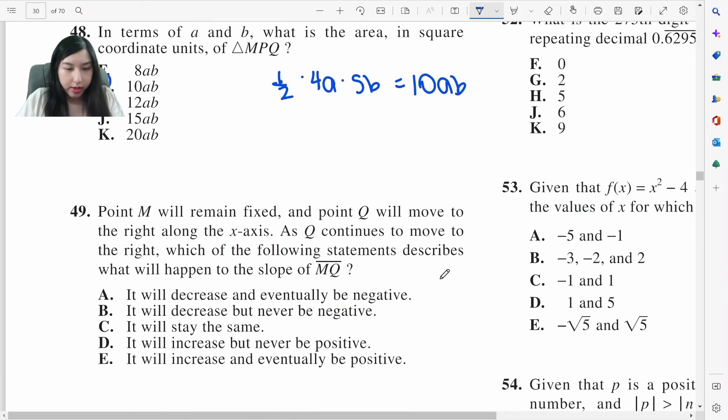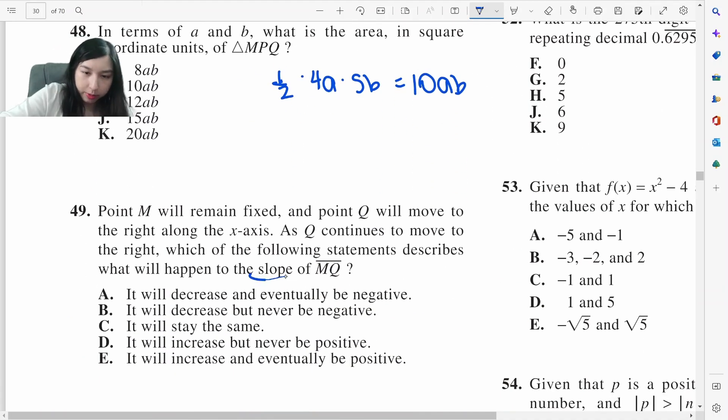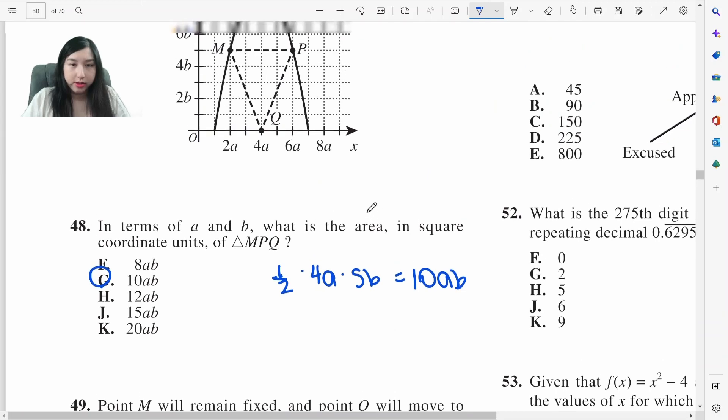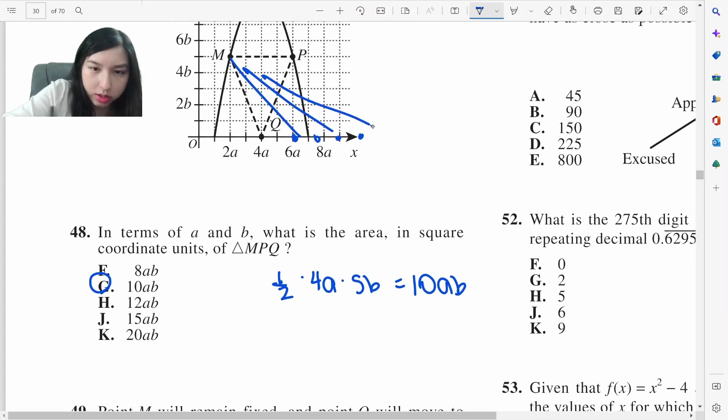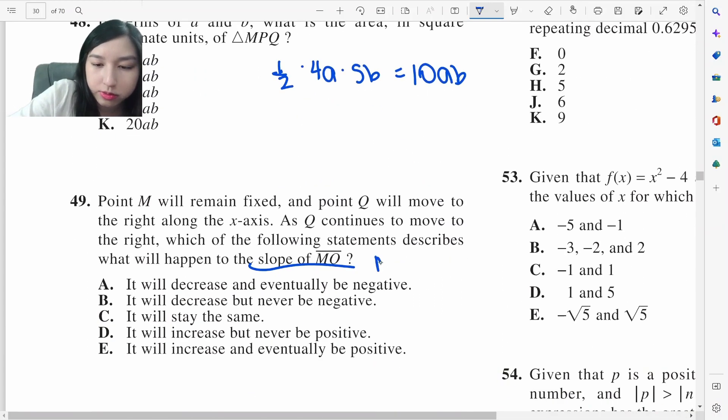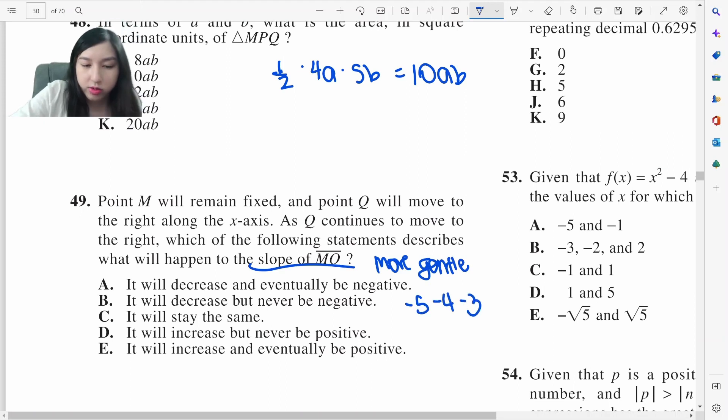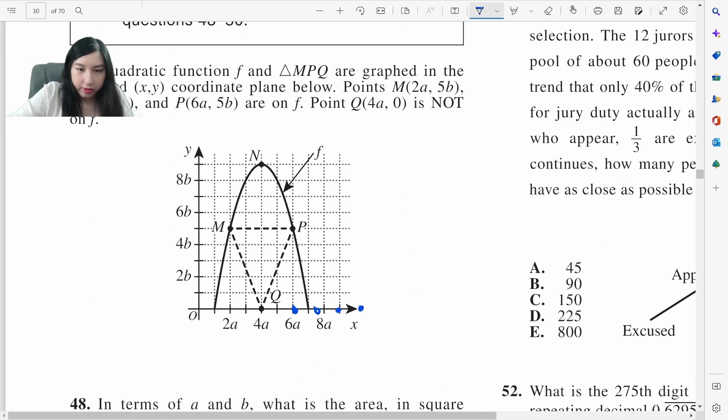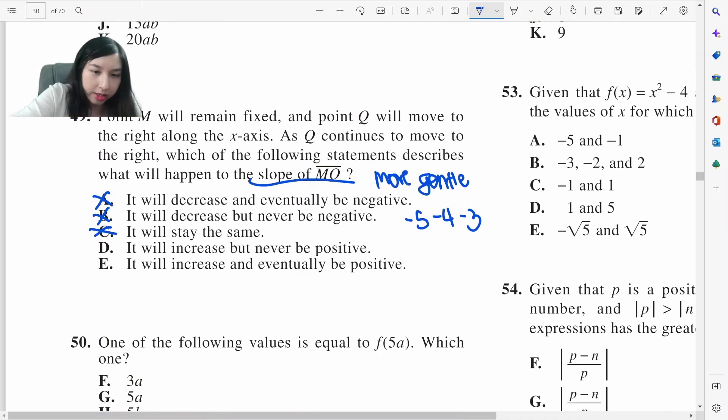Let's look at the next problem. Slope of MQ. What happens to it? M remains fixed. Q moves to the right. So Q moves this way. So it becomes more gentle. So more gentle. So like you're going to find negative 5, negative 4, negative 3-ish. So obviously it doesn't stay the same. Here's the trick. So someone who thinks more gentle would think it decreased, but because this is a negative number, it actually increases. But we'll never be positive eventually. Well, for it to be positive, it has to go up here, but that means it has to leave the x-axis. So that means it would never be positive, D.